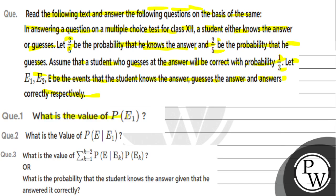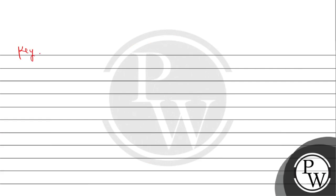The questions are: Part 1 - what is the value of P(E1)? Part 2 - what is the value of P(E|E1)? Part 3 - find the summation from k=1 to 2 of P(E|Ek)·P(Ek). Part 4 - what is the probability that the student knows the answer given that the answer is correct? We need to solve all these parts using the concept of conditional probability.